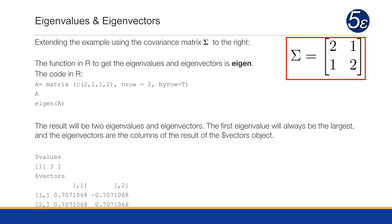So in R, let's say we have this matrix A, which is matrix C vector 2, 1, 1, 2, and row equals 2 by row equals true. So A is now that 2, 1, 1, 2, 2 by 2 matrix.